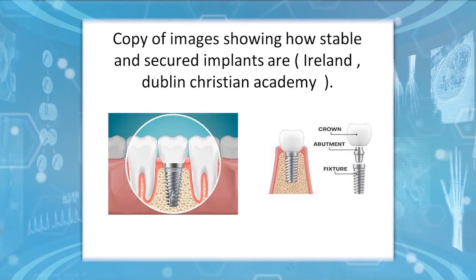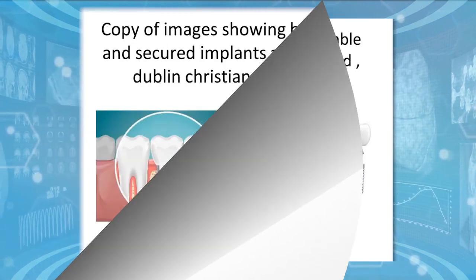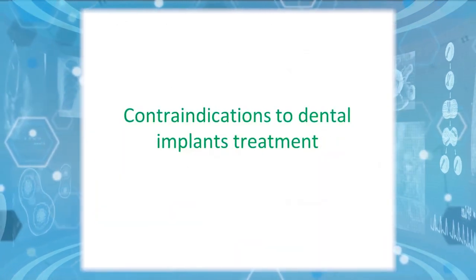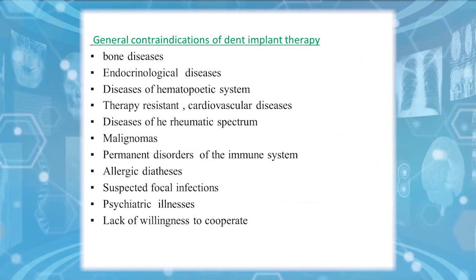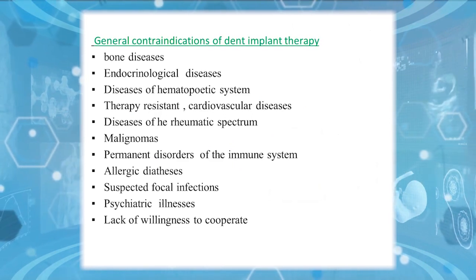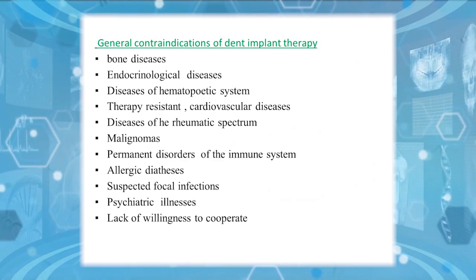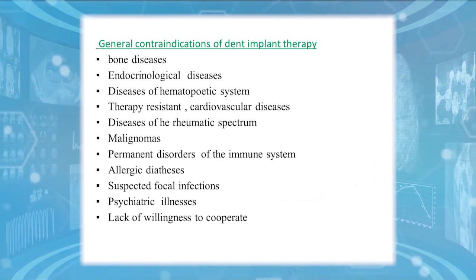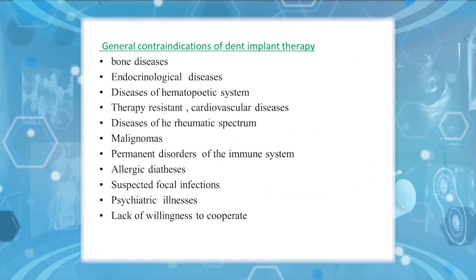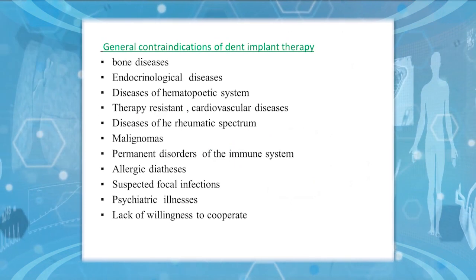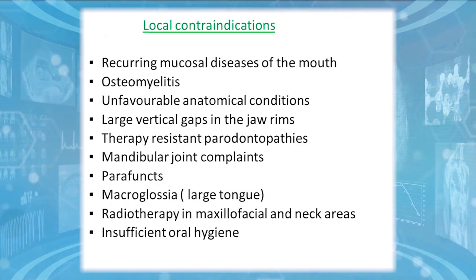What are the contraindications to dental implant treatment? General contraindications include bone disease, endocrinological disease, disease of the hematopoietic system, therapy-resistant cardiovascular disease, disease of the rheumatic spectrum, malignomas, permanent disorders of the immune system, allergic diathesis, suspected defocal infection, psychiatric illness, and lack of willingness to cooperate.